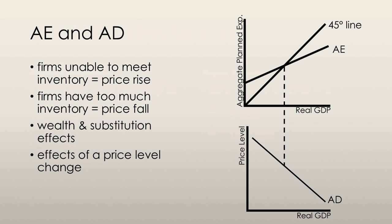So when the price level rises, the aggregate expenditure curve shifts downwards, and when the price level falls, the aggregate expenditure curve shifts upwards. When the price level changes, there's also a movement along the aggregate demand curve. At each point on the aggregate demand curve, it corresponds to a point of equilibrium expenditure on the aggregate expenditure curve.